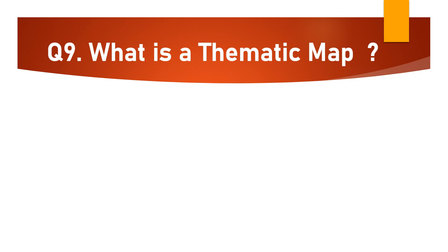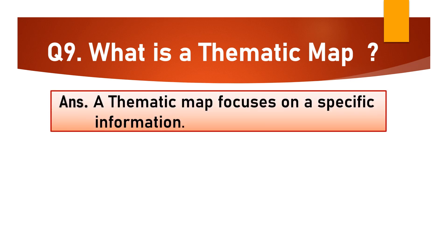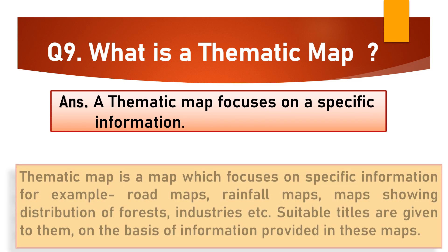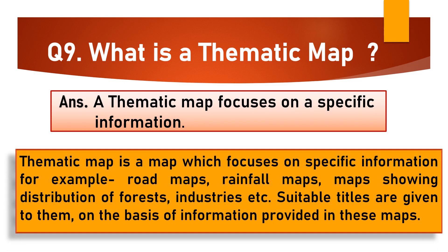Question No. 9: What is a thematic map? A thematic map focuses on specific information. For example, road maps, rainfall maps, maps showing distribution of forests, industries, etc. Suitable titles are given to them on the basis of information provided in these maps.